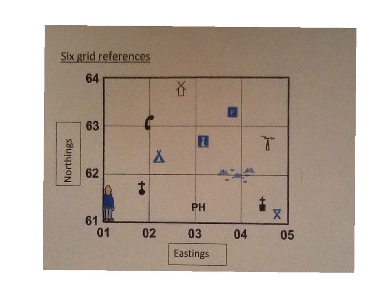As we know from four-figure grid references, all maps have along the bottom Eastings and Northings numbers. Eastings are 01, 02 and so on. Northings are 61, 62 and so on. Six-figure grid references have six figures in them and this is how it works.